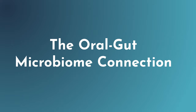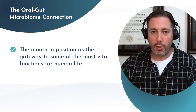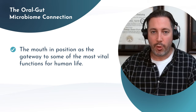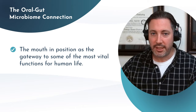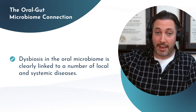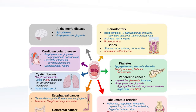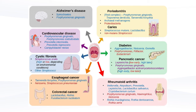So where does this oral-gut microbiome connection really come in? Since the mouth is positioned as the gateway for entry into the GI tract and performs vital functions for human life, it has a tremendous influence on many body processes. Dysbiosis in the oral microbiome is linked to a very high number of local and systemic diseases. Looking at this slide, we can see the connection to multiple health conditions — obvious ones like periodontitis and caries, but also diabetes, pancreatic cancer, rheumatoid arthritis, esophageal cancer, colorectal cancer, cystic fibrosis, cardiovascular disease, Alzheimer's disease, non-alcoholic fatty liver, and liver cirrhosis — all connected to dysbiotic patterns in the mouth triggering inflammatory conditions.